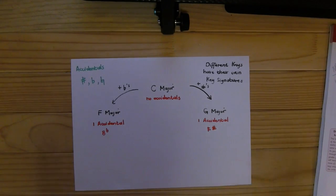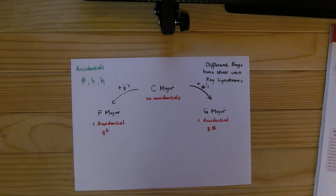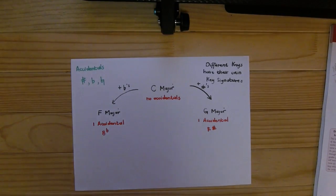For now, for Grade 1, all you need to remember is that key signatures are the sharps and flats that we put in front of a piece to make the piece easier to read and to keep the music in major or minor so that it sounds correctly—the tone-semitone relationship is correct.